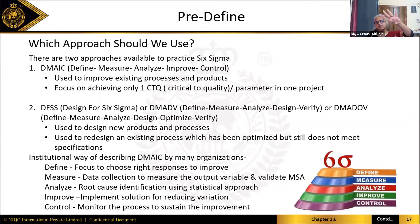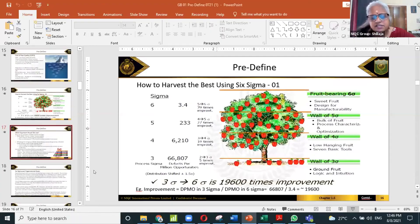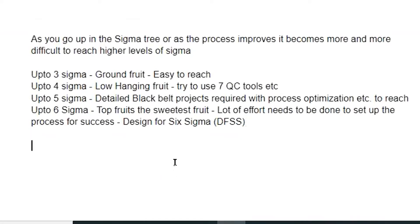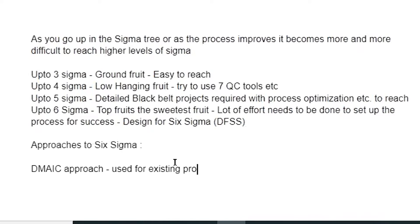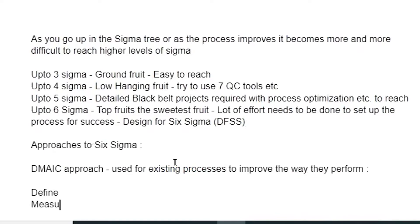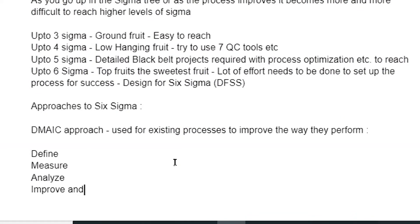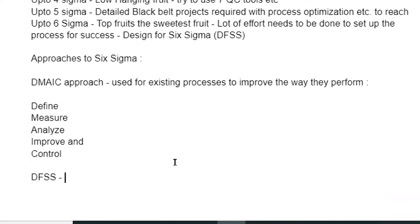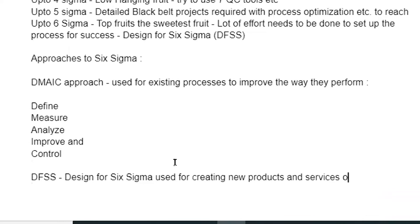There are two approaches to Six Sigma. One is the regular DMAIC approach, which stands for Define, Measure, Analyze, Improve, and Control — used to improve how existing processes perform. The other is DFSS, which is used for creating new products and services or for redesigning existing processes.